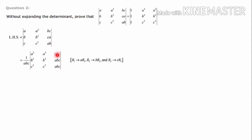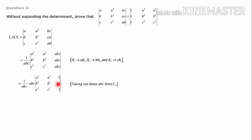After multiplying R1 by A: A becomes A², A² becomes A³, BC becomes ABC. Similarly multiplying R2 by B: B becomes B², B² becomes B³, CA becomes ABC. Multiplying R3 by C: C becomes C², C² becomes C³, AB becomes ABC. Now the third column has ABC common. Taking ABC out from C3, we get (1/ABC)·(ABC) × determinant [A², A³, 1; B², B³, 1; C², C³, 1]. The (1/ABC)·(ABC) = 1.